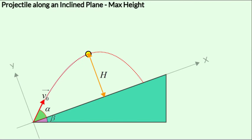Over the last few lessons, we derived expressions for the time of flight, the range, and the maximum height of a projectile — both for ground-to-ground scenarios and launches from inclines. These are not so easy to remember, so in the next lesson we will spend some time on how to remember these formulas more easily.